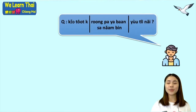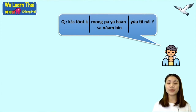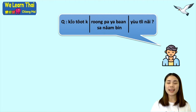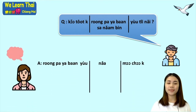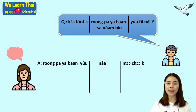When you want to ask someone where a place is, you use the question word 'thii nai'. For example: 'Kho thot krab, rong phayabal yu thii nai krab?' — excuse me, where is the hospital? And for the answer, you can say 'rong phayabal yu nha mo shokha' — the hospital is in front of Chiang Mai University.